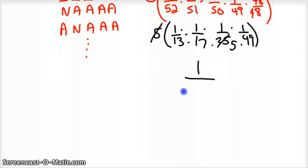Now you've got your probability, so it'd be one all the way across is one divided by 13 times 17 times five times 49 is 54,145. So that's the probability of four aces out of five cards.